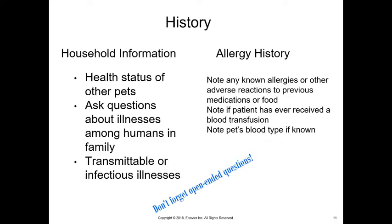Preventive medicine history includes vaccine history, heartworm prevention, flea and tick prevention, and dental care. When was the last time they had a dental cleaning? We'll be talking about how important dental care is for their pet — are they doing anything at home? Behavioral information: we want to know what their normal behavior is and any changes in behavior. Remember, behavior is super important when relating it to illness.